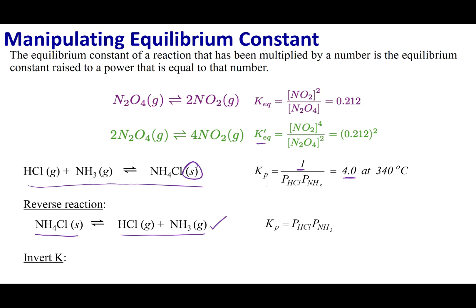If I write the equilibrium constant for the second reaction — products over reactants raised to stoichiometric coefficients — you can see how these Kp's are related. Since I flipped the order in which the reaction was written, I'm going to flip my Kp, or in other words write the inverse expression. The take-home message: if you reverse the order in which you write the reaction, you take 1 over your equilibrium constant to get the new equilibrium constant for that reaction.